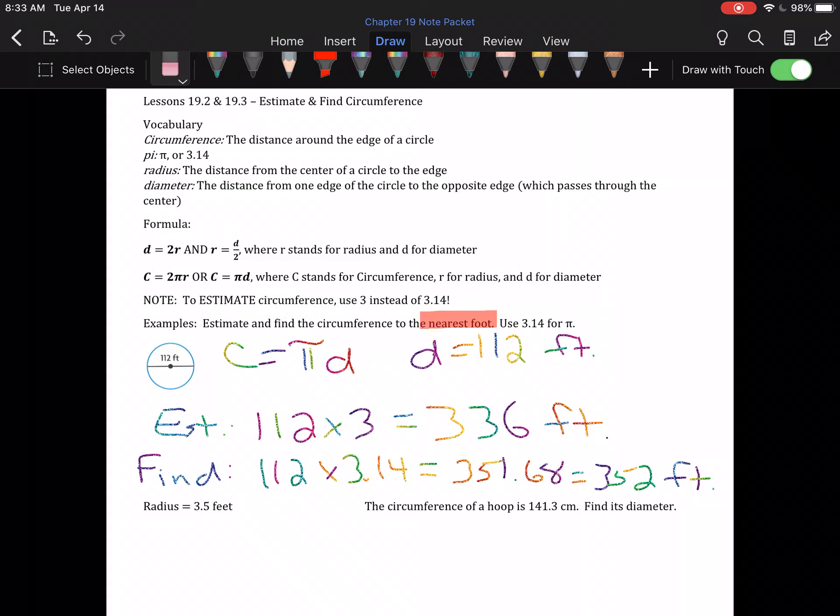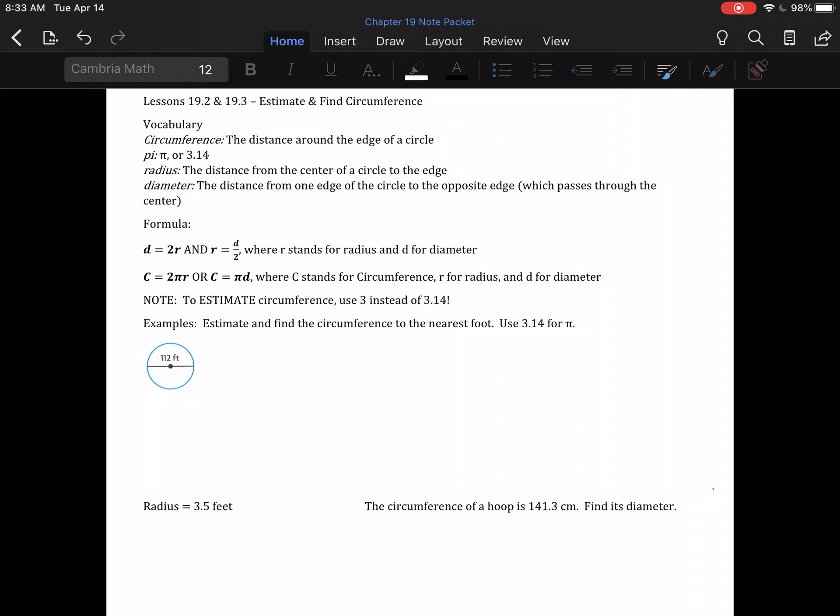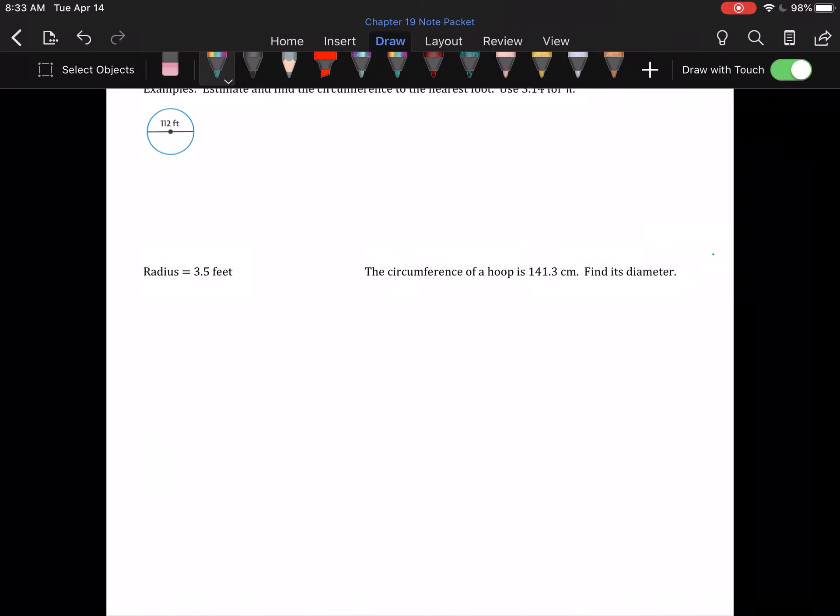That's all there really is here. It's not meant to be terribly difficult. Now, here, they don't give me the circle. They just tell me straight up the radius is 3.5 feet. So we can use C equals 2 pi R.